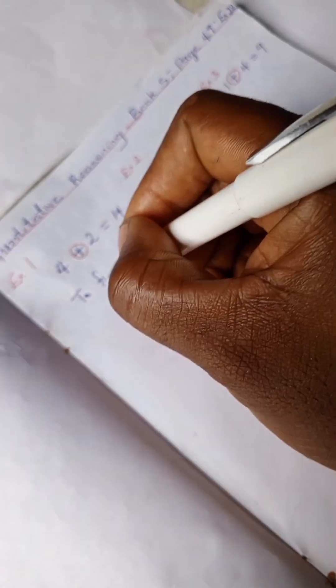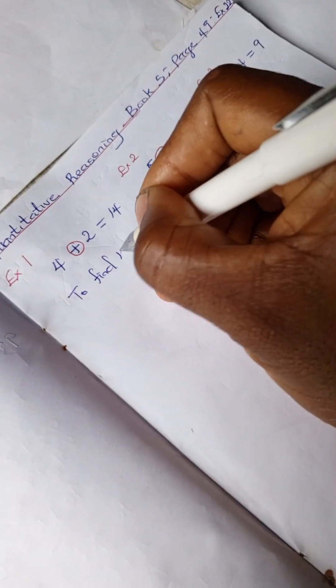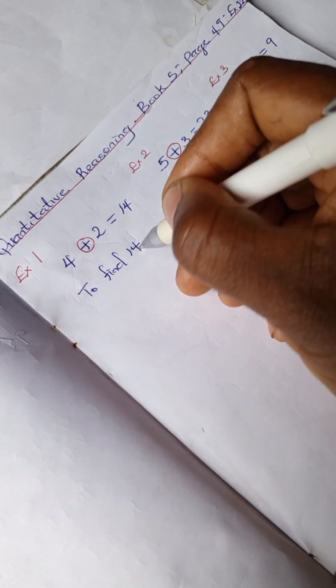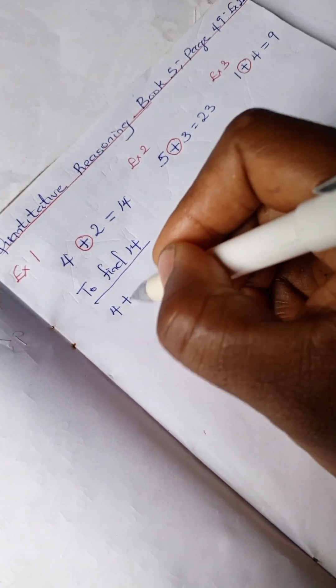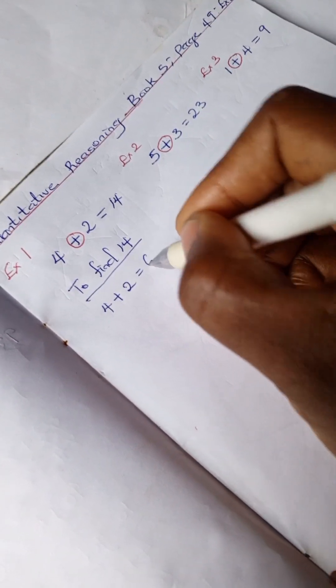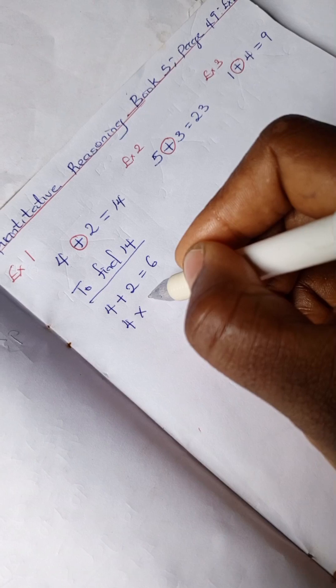What was done to find 14? To find 14, we have 4 plus 2 equals 6, and 4 times 2...